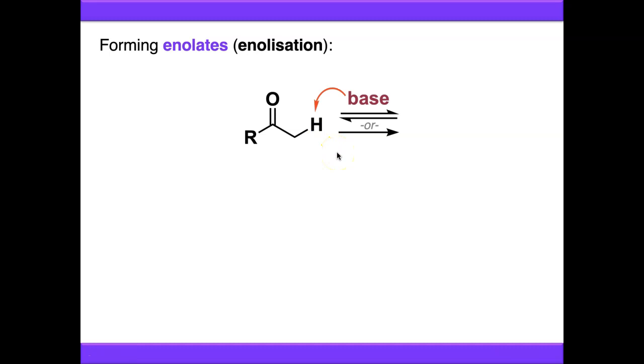The base removes the proton, and we kick the electrons all the way up onto the oxygen atom. That gives us this resonance form of our enolate. This is typically the one that we draw because it's the most stable, with the negative charge on oxygen rather than carbon.